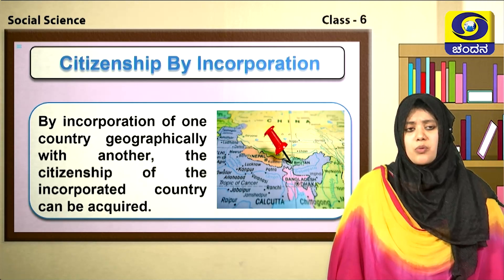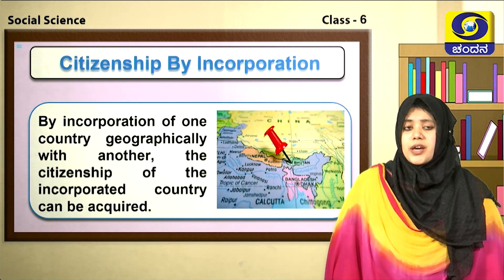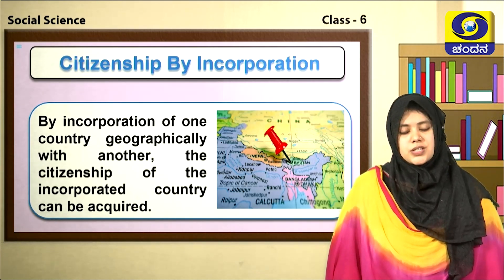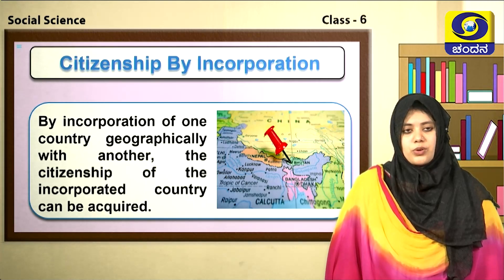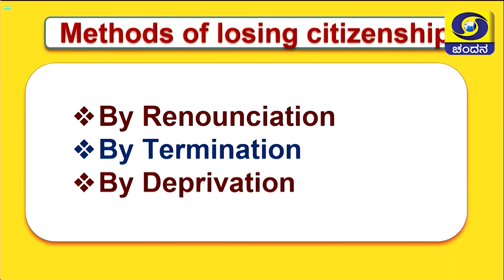So far we have studied about acquiring citizenship, but there are certain ways a person loses his citizenship. We call these the methods of losing citizenship. There are three methods of losing citizenship — by renunciation, by termination, and by deprivation.